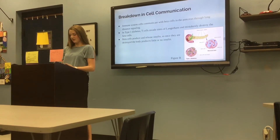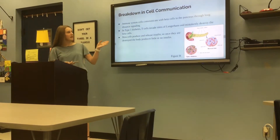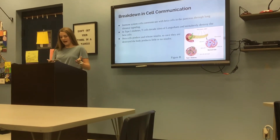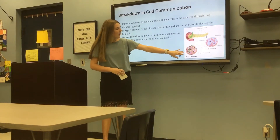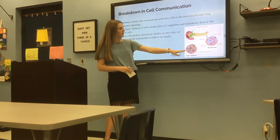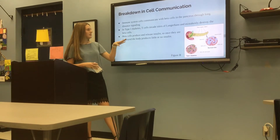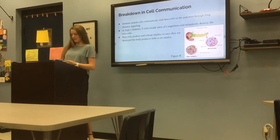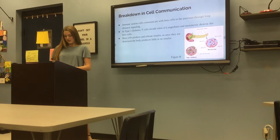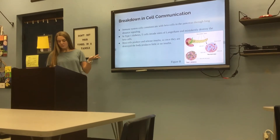In the immune system, the cells communicate with the beta cells — more specifically, the T cells. In type 1 diabetes, the islets have the beta cells and alpha cells in them. The T cells go in and invade them, and they mistakenly attack the beta cells. Once this happens, the beta cells can no longer produce insulin.